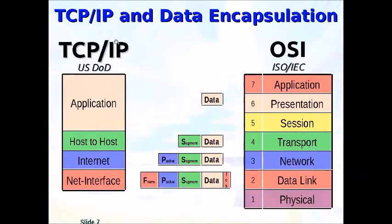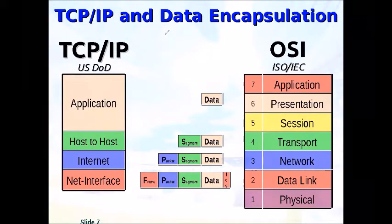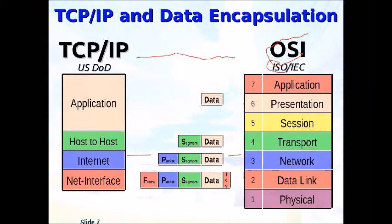IP is the internet protocol — it refers to how we transfer messages around the world. The US Department of Defense created the TCP/IP model. An application creates data, which must be addressed to be sent to another location. At the host-to-host layer, they specify TCP or UDP port number, source and destination. IPsec works at the internet layer. The ISO adopted TCP/IP and called it the Open Systems Interconnect model. In this context, we are talking about applying encryption at layer three, the network layer, the IP layer.